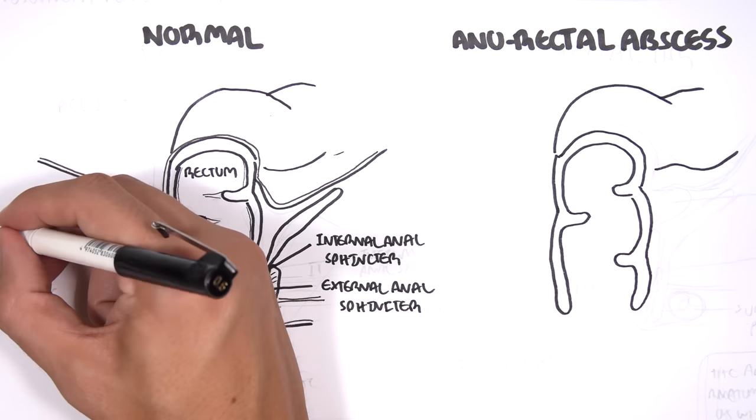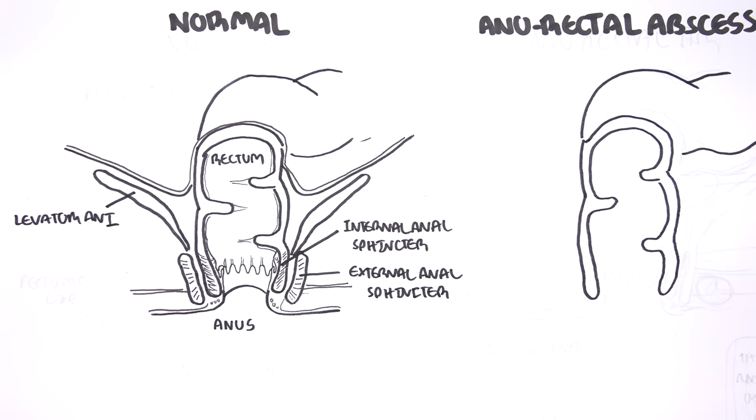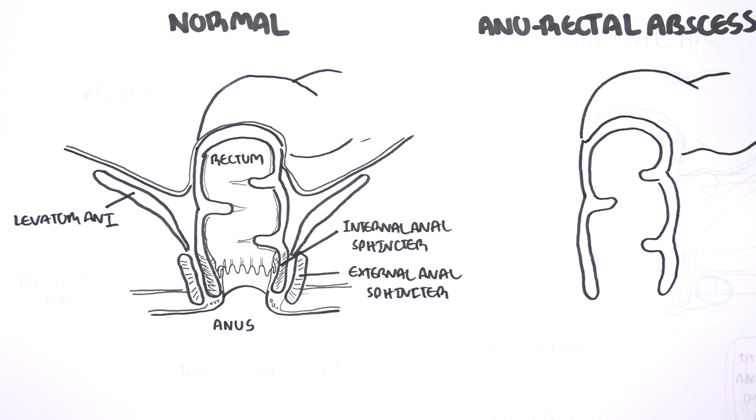The levator ani, also known as the muscular pelvic diaphragm, is the muscle tendinous sheath that forms the majority of the pelvic floor. It supports the pelvic viscera and aids in urinary and fecal movement, as well as maintaining continence.